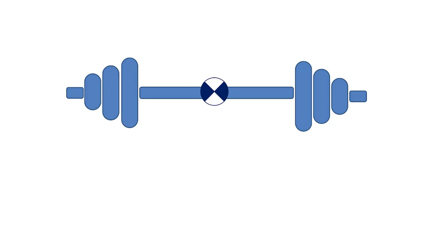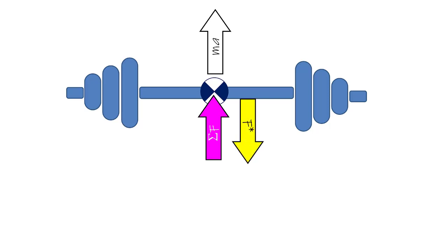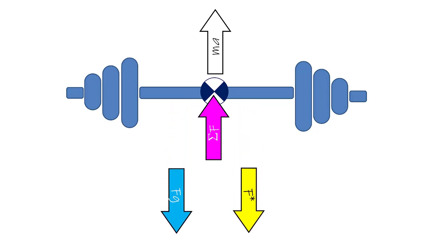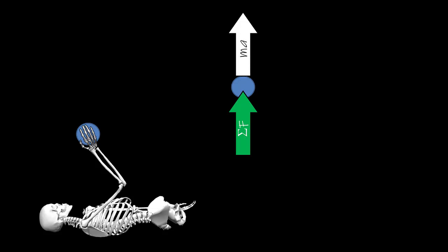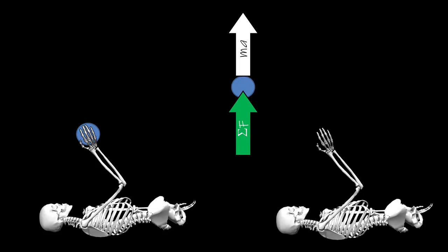Another way to think about that: consider the barbell. The sum of the forces acting on the barbell is going to be equal to its mass times its acceleration, and we already said that this is going to be the inertial force. The forces acting in the downward direction are going to be the inertial force and the force due to gravity. These forces together create an external force acting on our body, and therefore our body has to produce a force equal in magnitude and opposite in direction to this external force. Conceptually, let's say we are lying on the ground trying to push up a medicine ball. The sum of all the forces acting on that medicine ball equals the mass times the acceleration. Therefore, the forces we have to produce — equal in magnitude and opposite in direction — are going to be equal to the inertial force plus the force due to gravity.